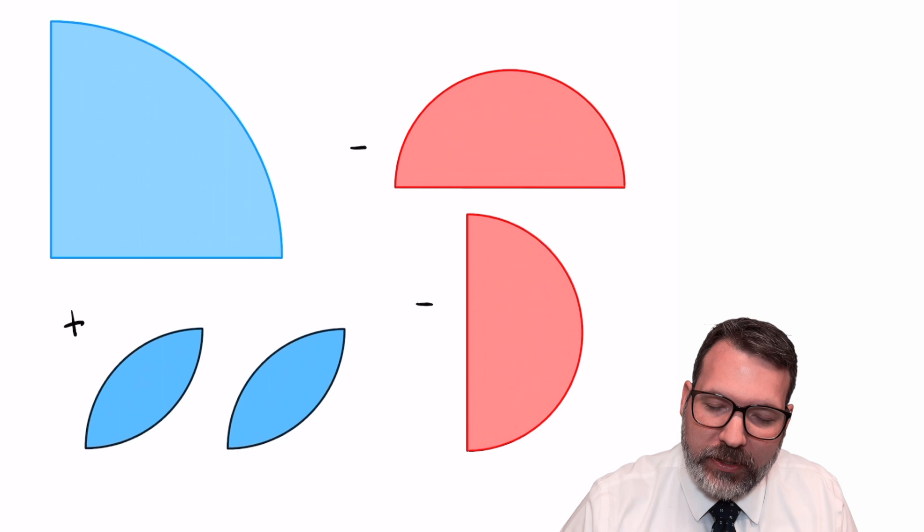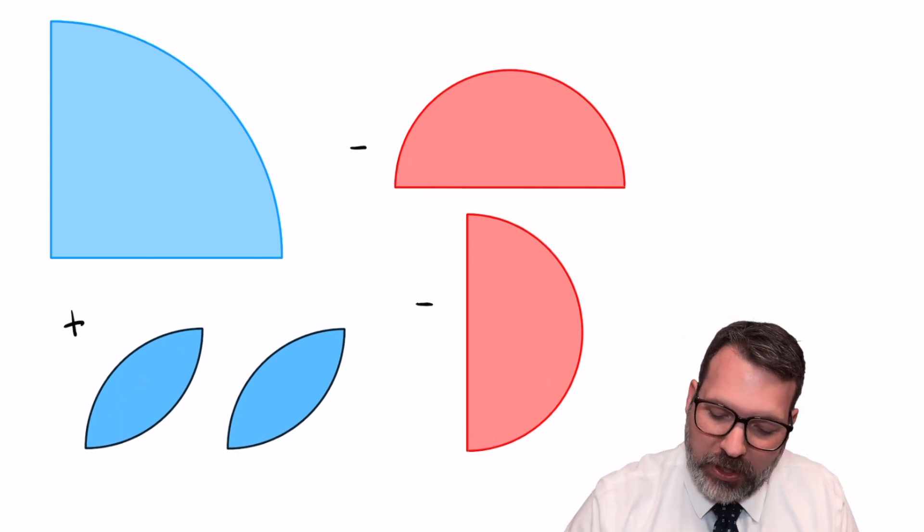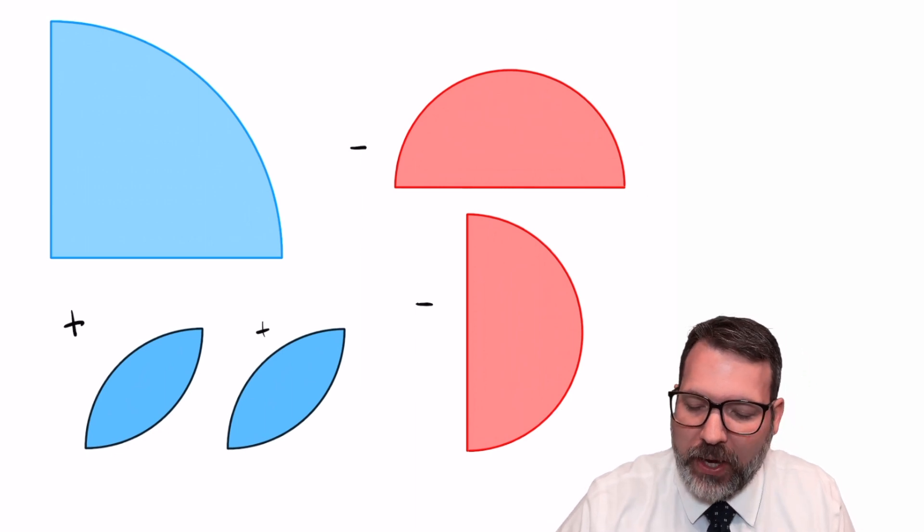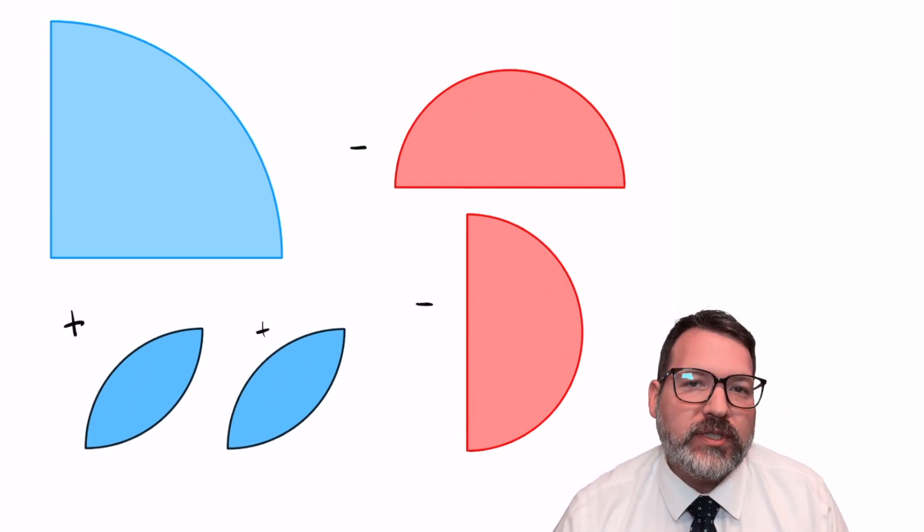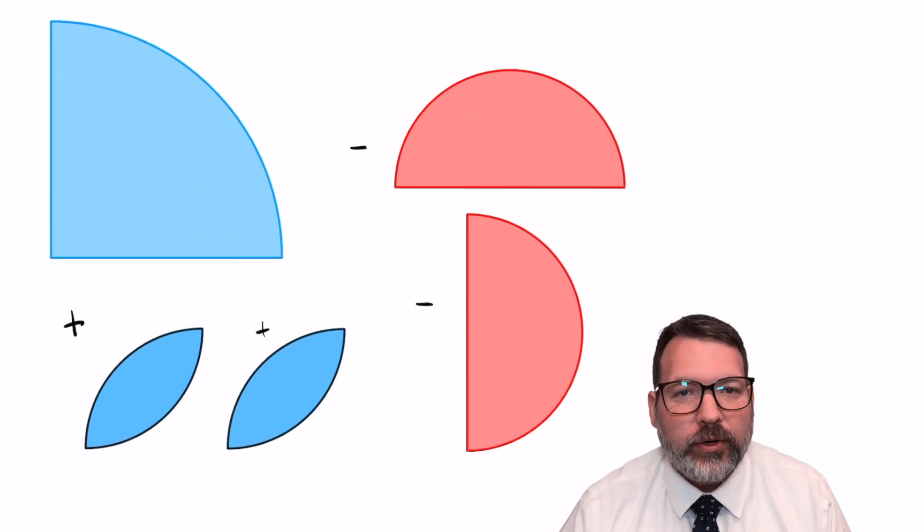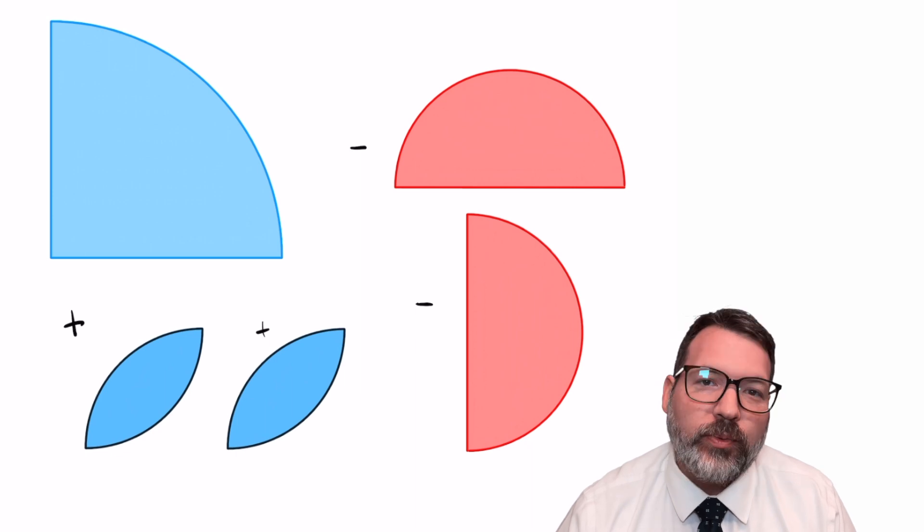So adding it back in just once only compensates for the time that we subtracted it away as we subtracted away the semicircles. To do this properly, we're actually going to need to bring in a second football-shaped region, because that's going to compensate for the fact that we are accidentally subtracting it away when we subtract both of those semicircles. Add together the two footballs and the quarter circle, subtract away the two semicircles, and that will be the original shaded region that we wanted.